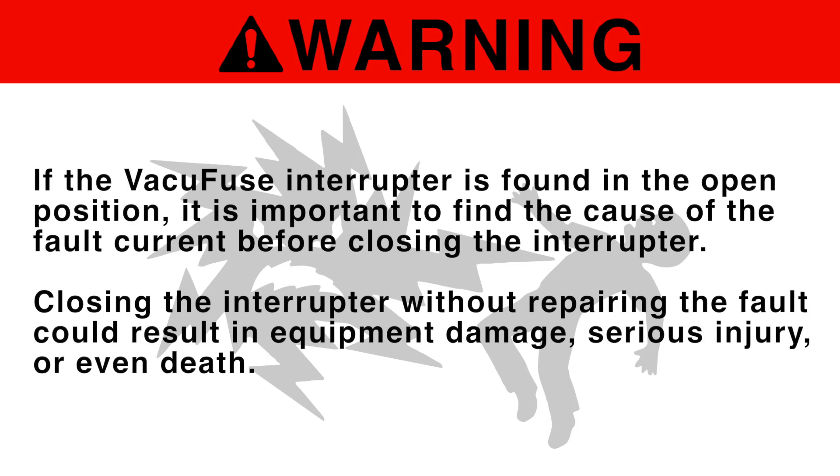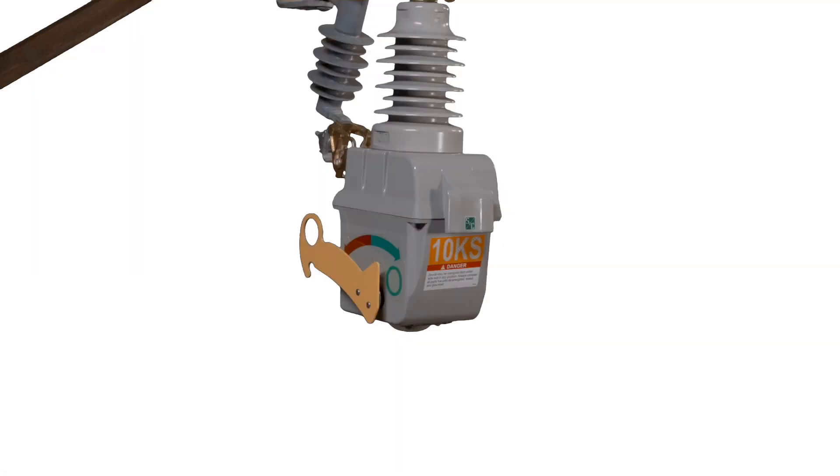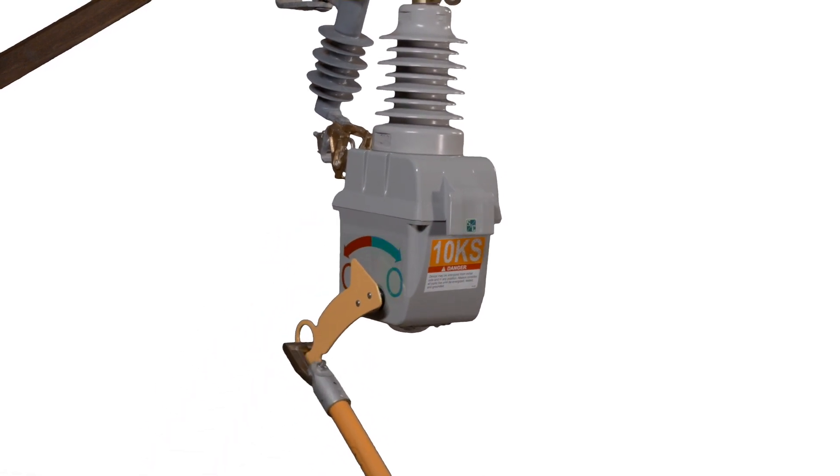If the VacuFuse interrupter is found in the open position, it is important to find the cause of the fault current before closing the interrupter. Closing the interrupter without repairing the fault could result in equipment damage, serious injury, or even death. After the cause of the fault has been determined and after any necessary repairs completed, the VacuFuse self-resetting interrupter can be closed by pulling down on the open-close lever.